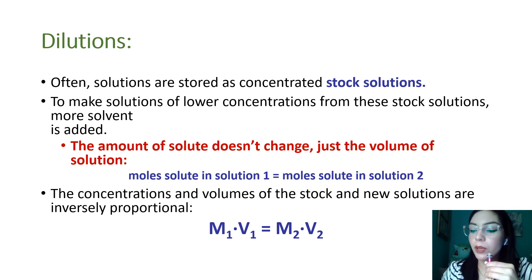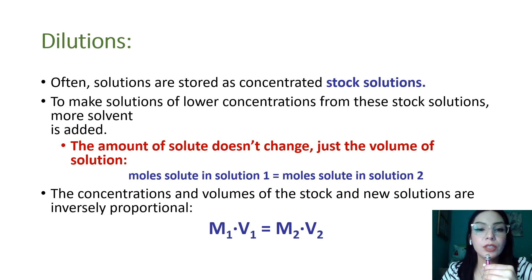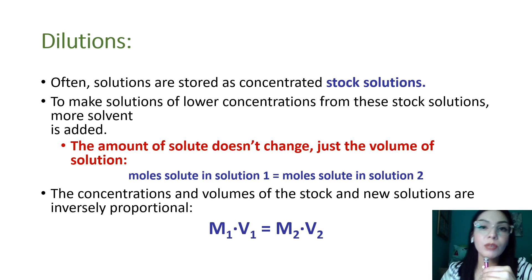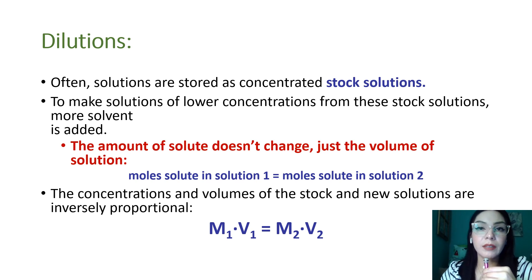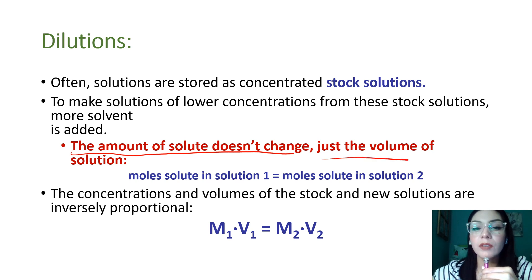In the lab, we typically store very concentrated stock solutions, which are useful because you can make dilutions from them. To make dilutions accurately, you must calculate how much of that stock you need. The key concept is that when making a dilution, all you're doing is changing the volume — you're not changing the amount of solute.